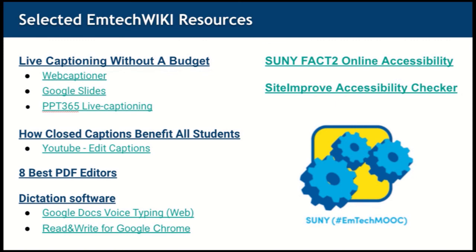In addition, there are resources that are websites about accessibility. The SUNY FACT2 task group has created a great website, and that is one of the resources on EmTech. Another resource is Siteimprove, an accessibility checker. This is something that the University of Buffalo has licensed for the enterprise. However, many people might not have that ability — they can use the free version of Siteimprove to a certain extent.